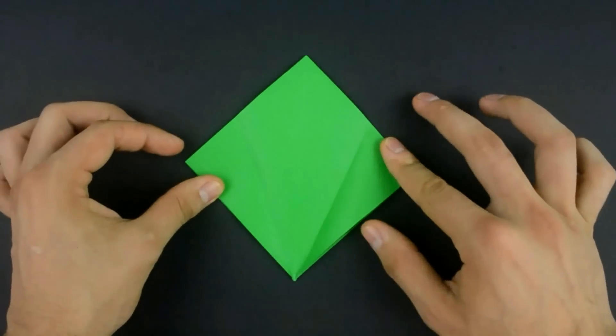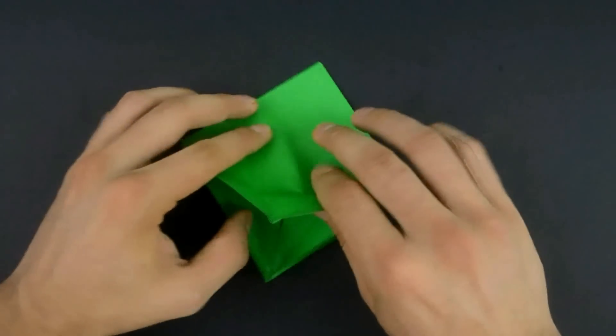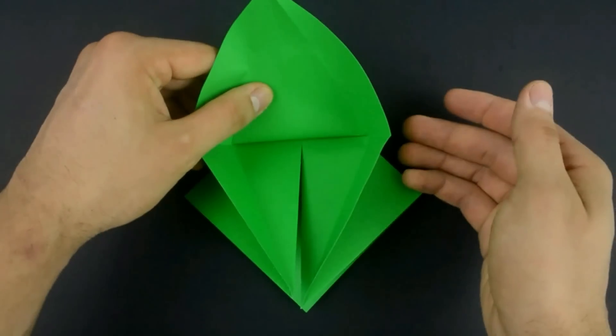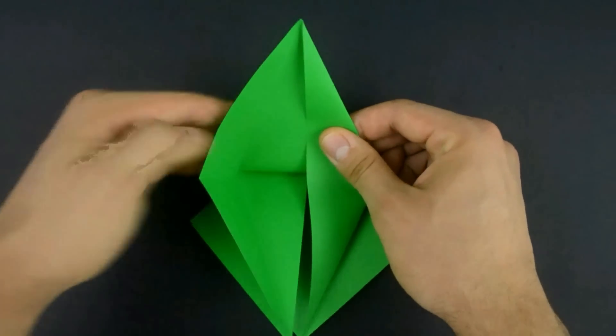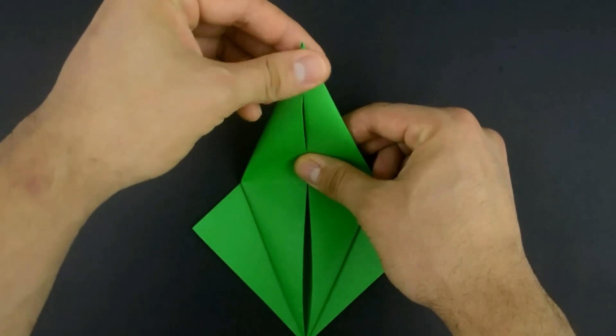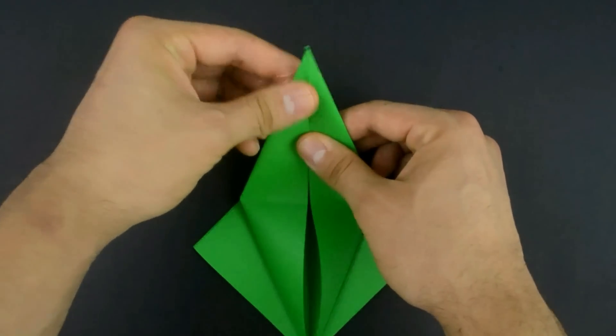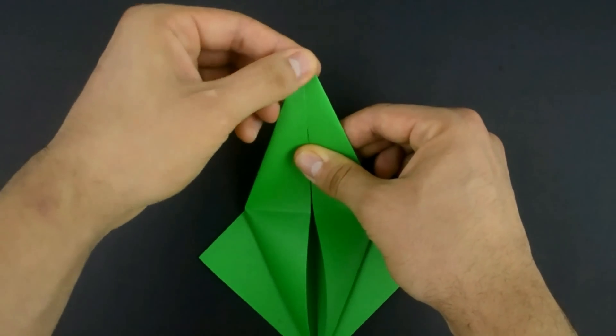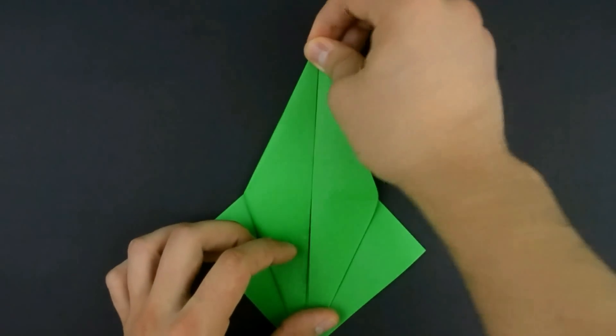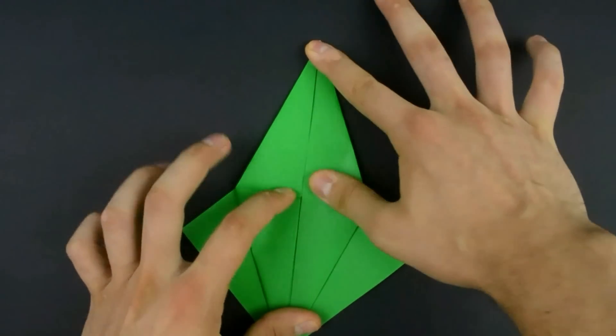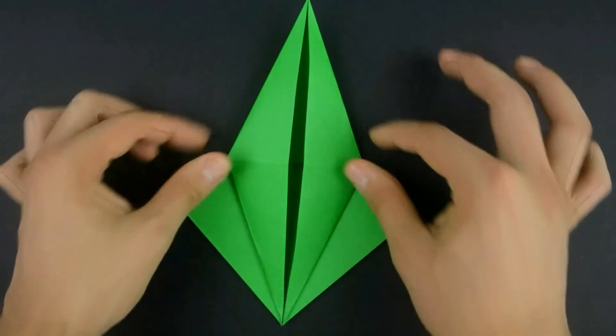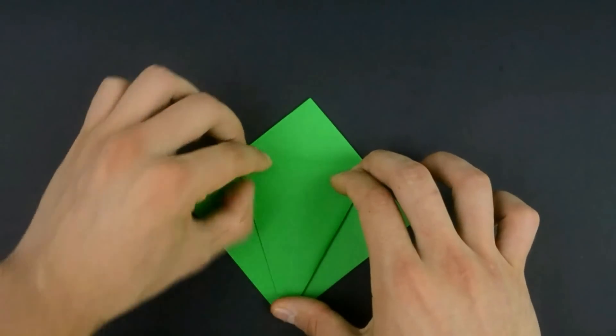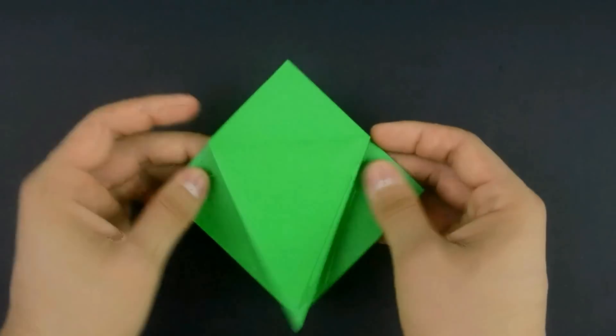Lift the first layer and bring both sides to the center, using the existing creases as a reference. Reinforce with the flap up, then down. That's the result.